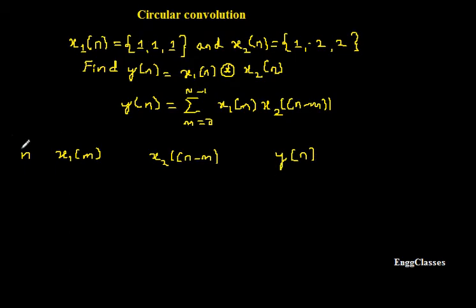So what can be the value of n? If you see, x1(n) is a sequence of 3, x2(n) is also a sequence of 3 samples. So it must be a 3-point DFT. n can take 3 values which are 0, 1 and 2.